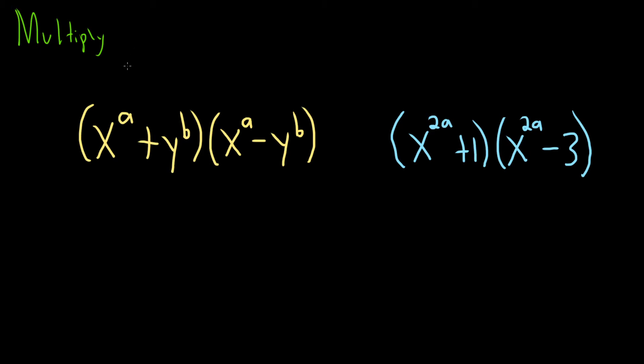It has the form a plus b times a minus b. And whenever we have this, we end up with a squared minus b squared. That's called the difference of squares formula. So here our a is x to the a and our b is y to the b.